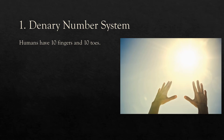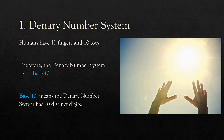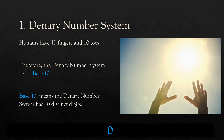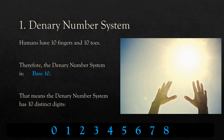Denary number system. Humans have 10 fingers and 10 toes, therefore the denary number system is base 10. Base 10 means that the denary number system has 10 distinct digits. Those digits are 0, 1, 2, 3, 4, 5, 6, 7, 8, and 9.